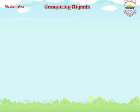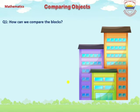We start Question 1: How can we compare the blocks? As you see in the picture, there are three different lengths of blocks. We compare these blocks according to their length.